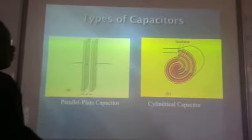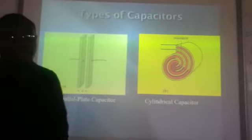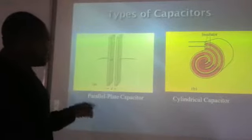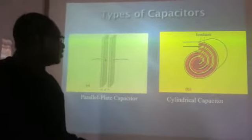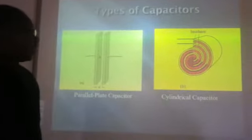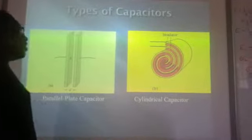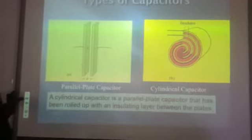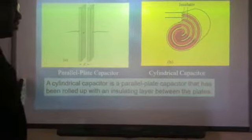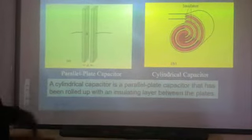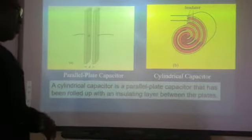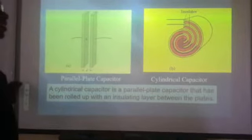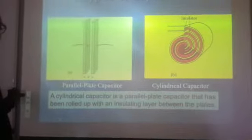There are two types of capacitors we are going to look at: the parallel plate capacitor and the cylindrical capacitor. A cylindrical capacitor is a parallel plate capacitor that is rolled up with an insulating layer between the plates — like a sandwich.